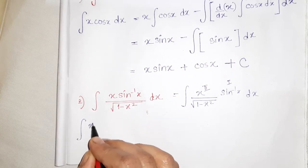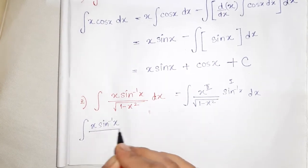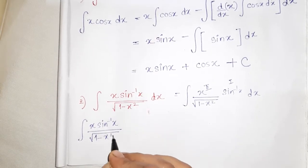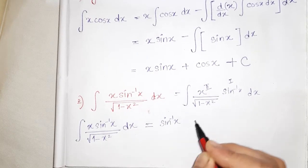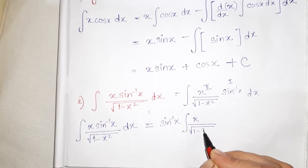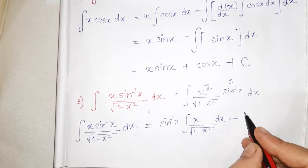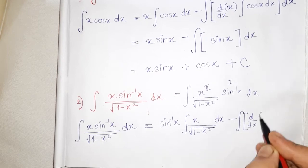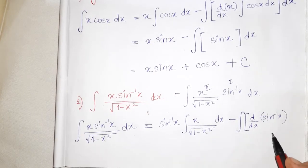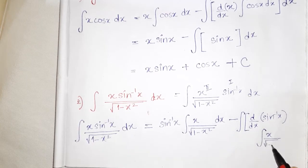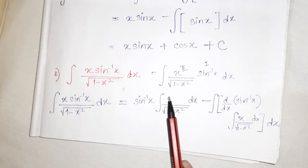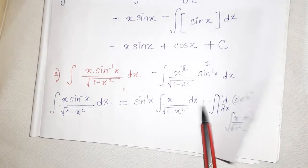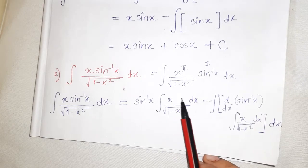According to ILATE, sin inverse x is the first function and x divided by root over 1 minus x square is the second. We write the formula: integration of x sin⁻¹x / √(1−x²) dx equals sin⁻¹x times integration of (x / √(1−x²)) dx, minus integration of the bracket containing differentiation of sin⁻¹x times integration of (x / √(1−x²)) dx, then dx.